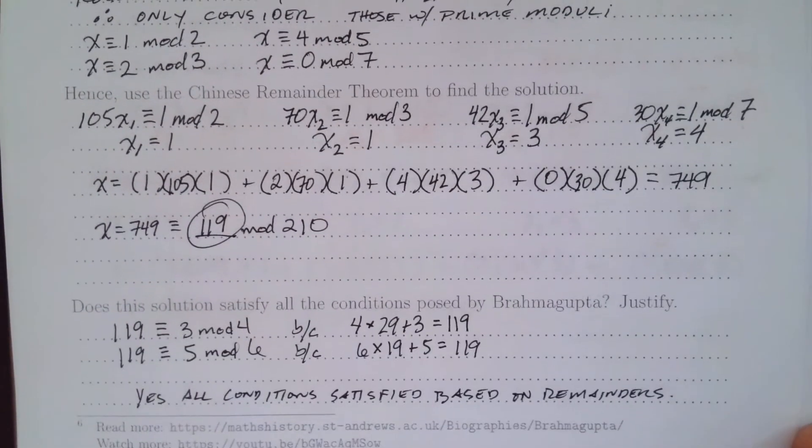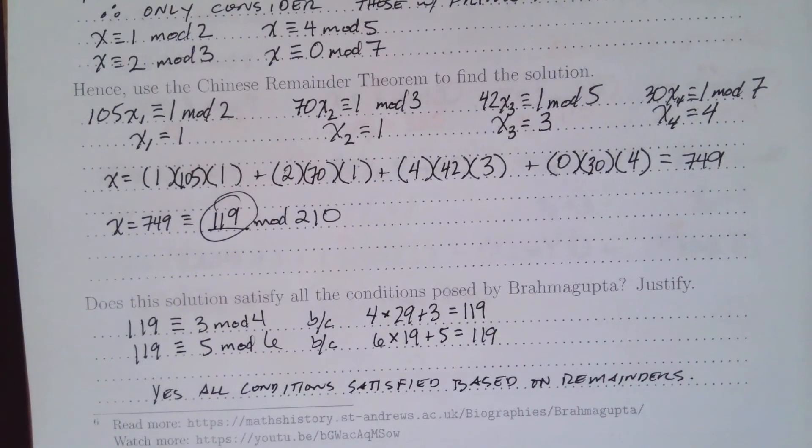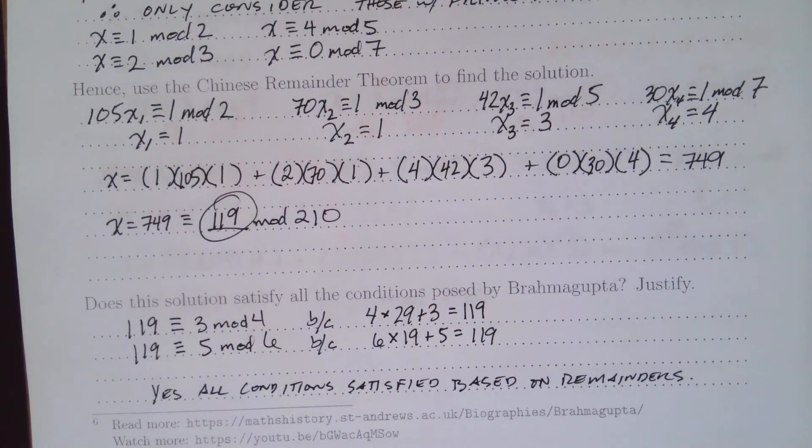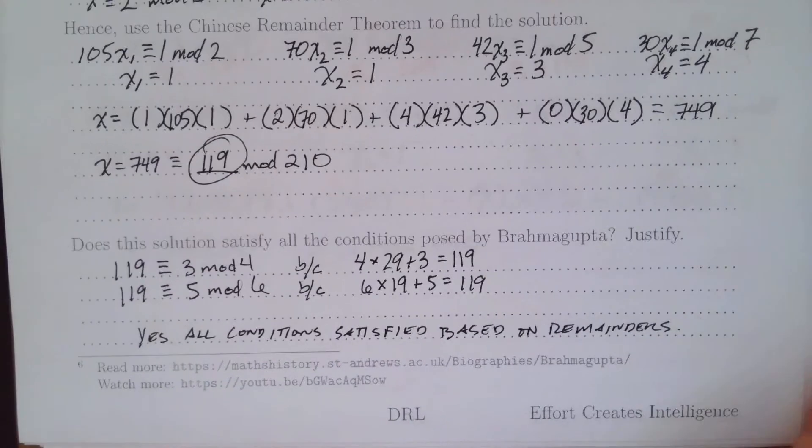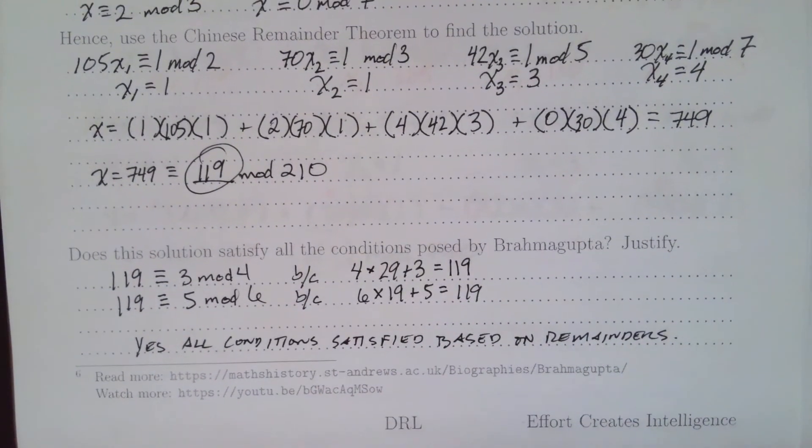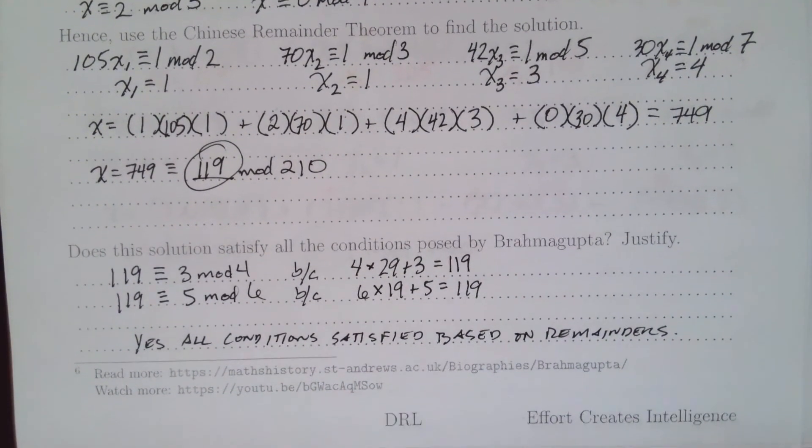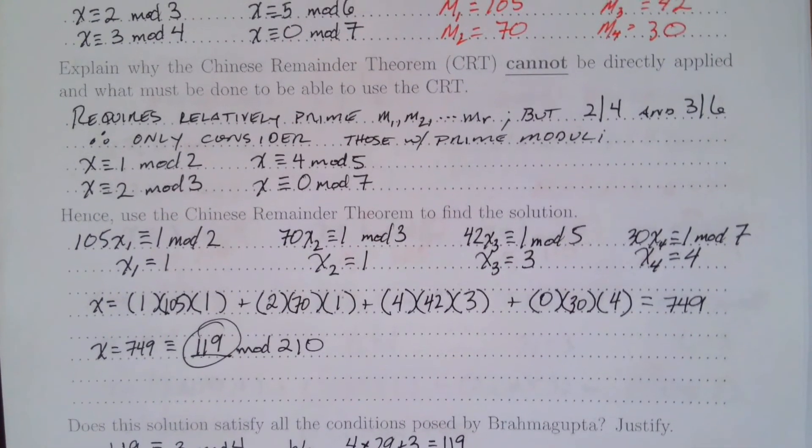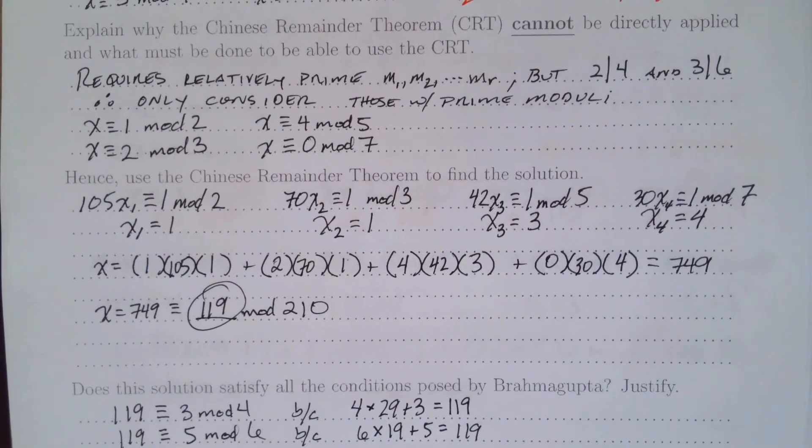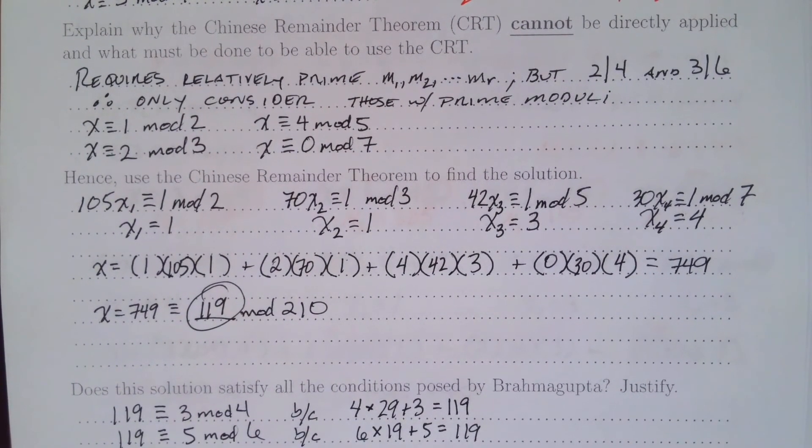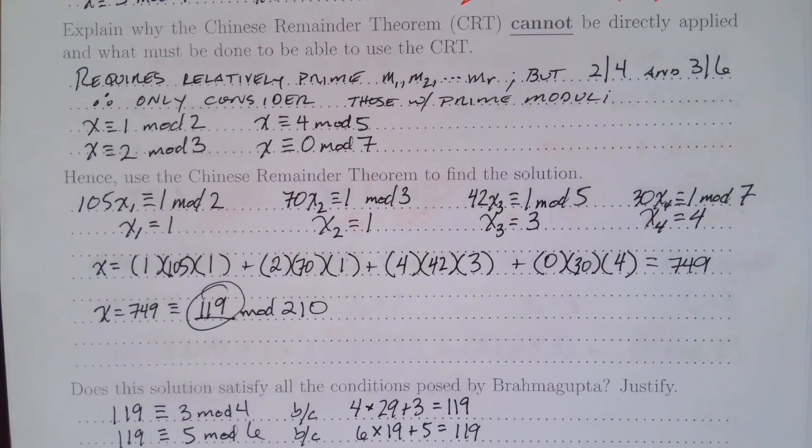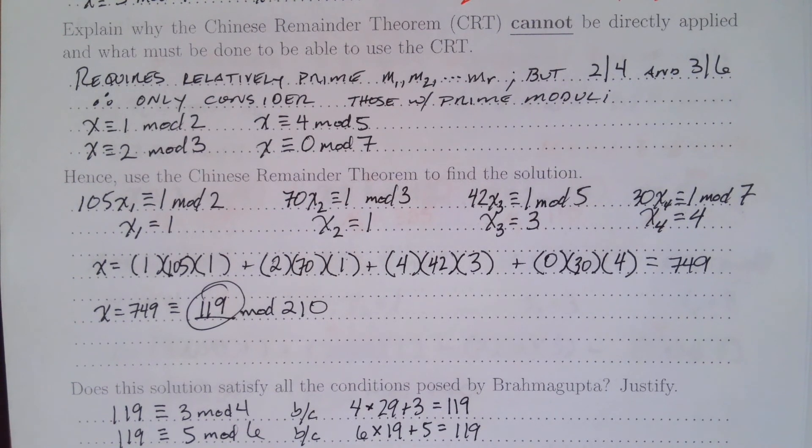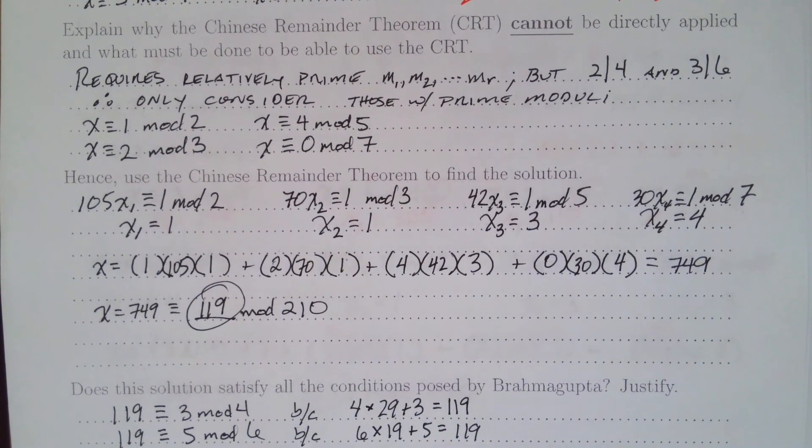This is an interesting problem posed by the Indian mathematician Brahmagupta. If you'd like to read more about or watch more about Brahmagupta, I've got some links you can use. The history of mathematics is actually quite interesting. As always, if you have questions please reach out. In our next video we're going to solve this problem in a slightly different way that does not involve the Chinese Remainder Theorem. Please stick around for Maths with El Profelo.